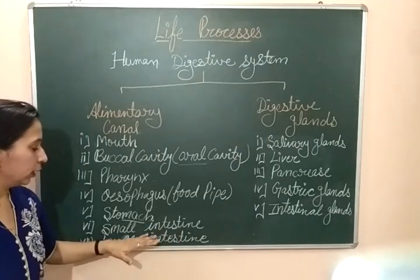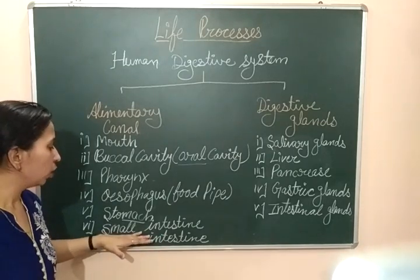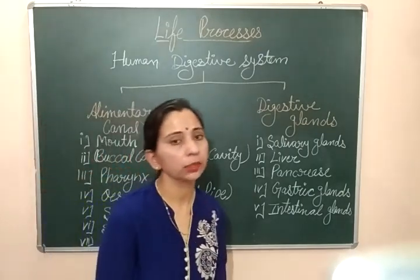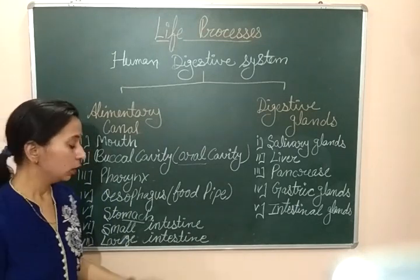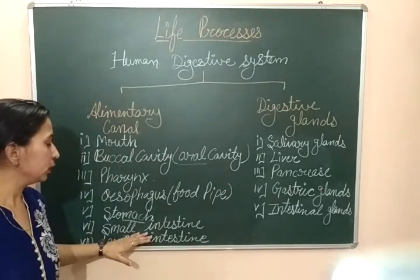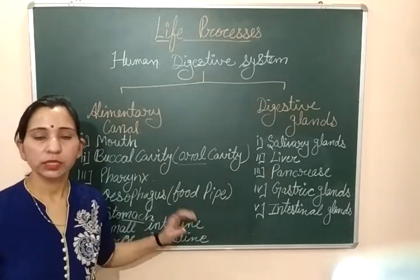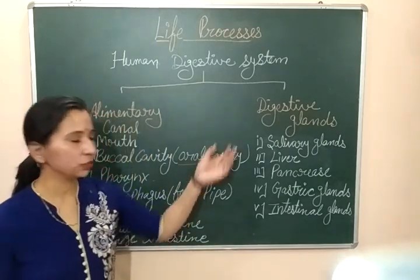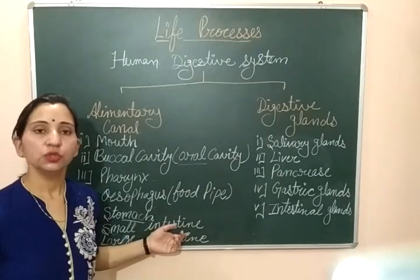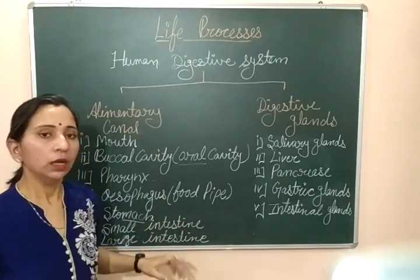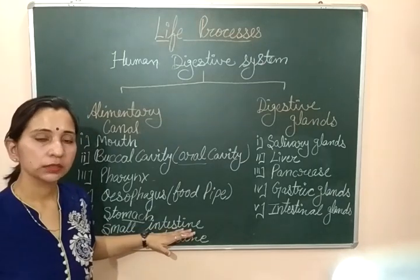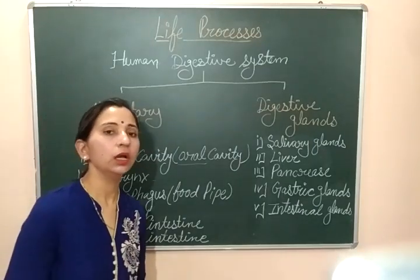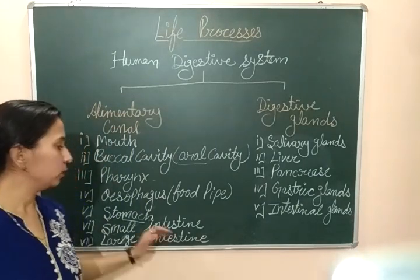After the small intestine comes the large intestine. Don't get confused by the names small and large intestine — this refers to their size, not length. The small intestine is divided into three parts: duodenum, jejunum, and ileum. In the small intestine, food is further digested. In fact, complete digestion occurs in the small intestine.